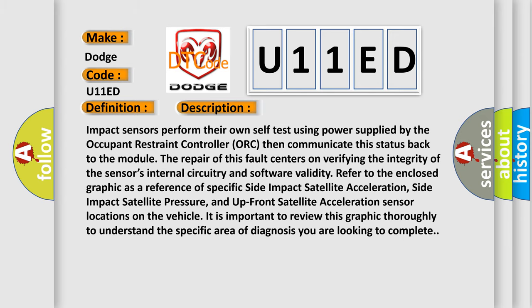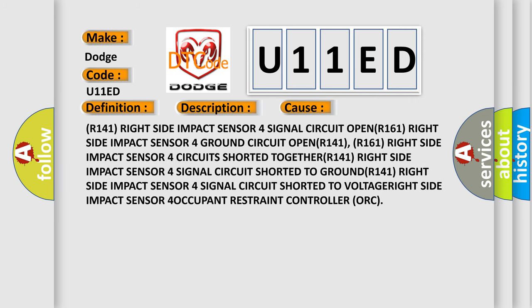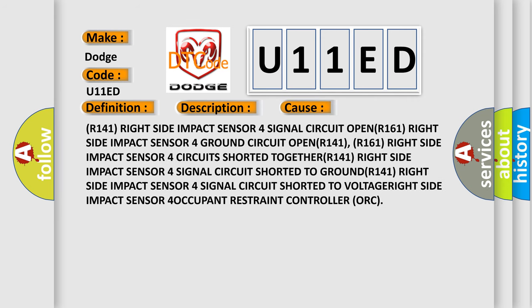This diagnostic error occurs most often in these cases: Right side impact sensor 4 signal circuit open (R161); Right side impact sensor 4 ground circuit open (R141); Right side impact sensor 4 circuits shorted together; Right side impact sensor 4 signal circuit shorted to ground; Right side impact sensor 4 signal circuit shorted to voltage; Right side impact sensor 4 to Occupant Restraint Controller (ORC).